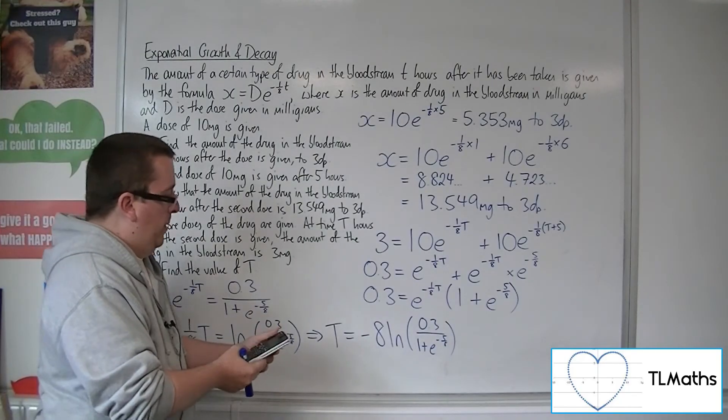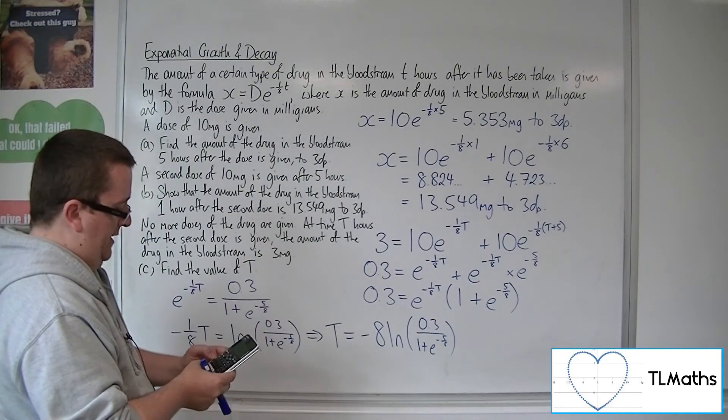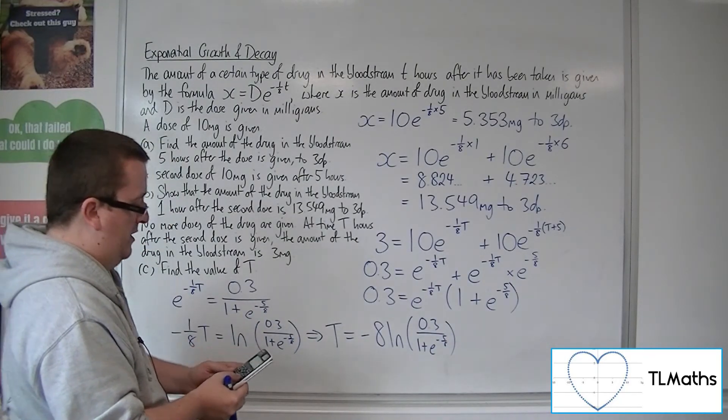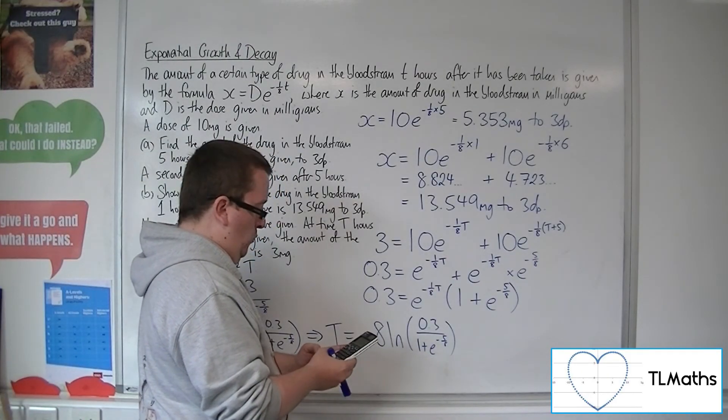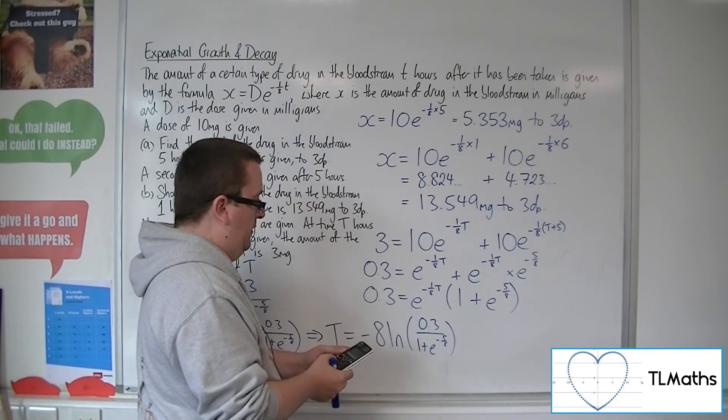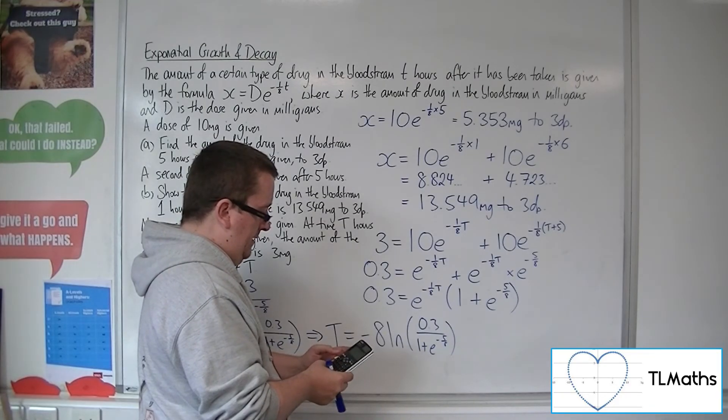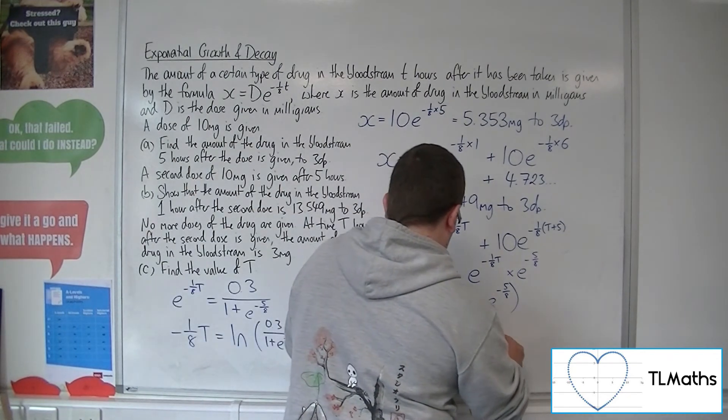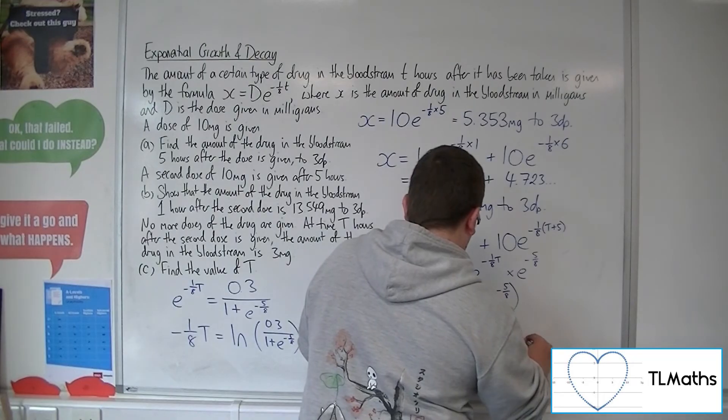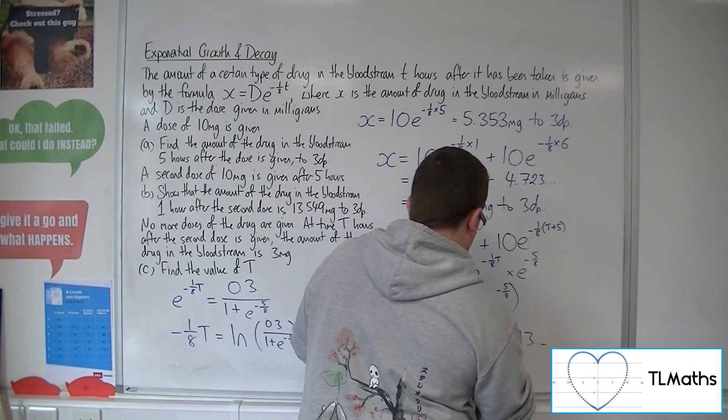So now if you plug that into your calculator, minus eight times ln of 0.3 over one plus e to the minus five-eighths. And we get 13.0613, et cetera.